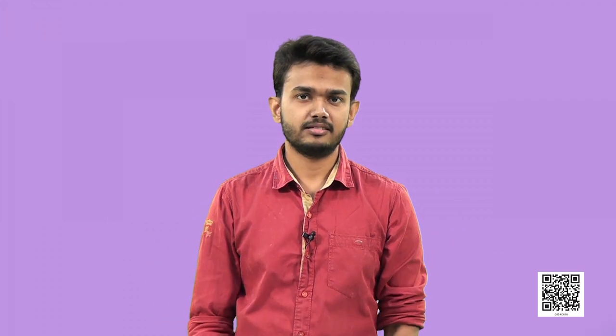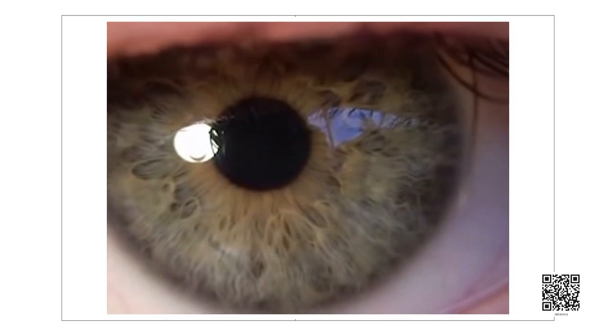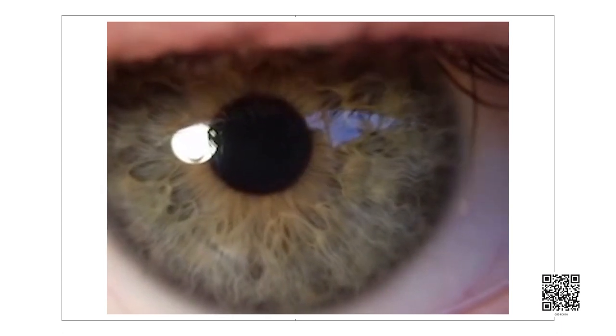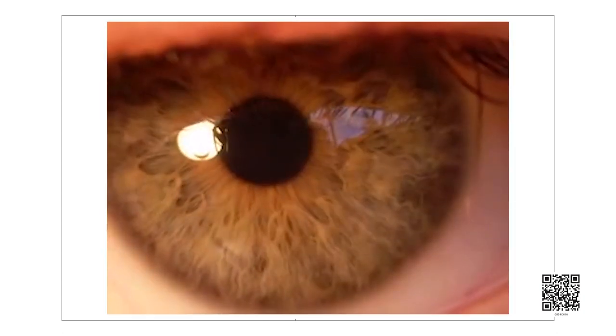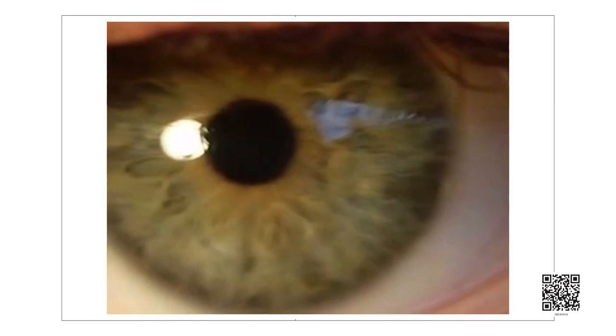The size regulation of the pupil takes about a second. Try lighting a dim torch into your friend's eyes — you can see the sudden contraction of the pupil to shut out excess light. When you switch the torch off, the pupil enlarges or dilates back again. Also, if you stay sometime in bright light and then come to a dimly lit room, you may feel blind for about a second, because the pupil dilates to receive more light. This process takes about a second.